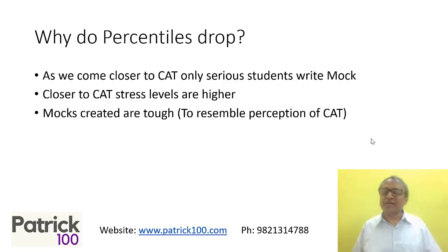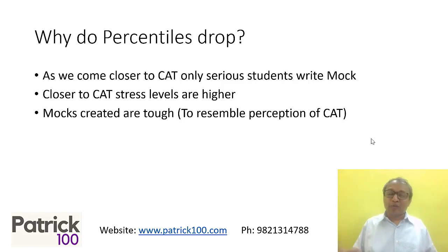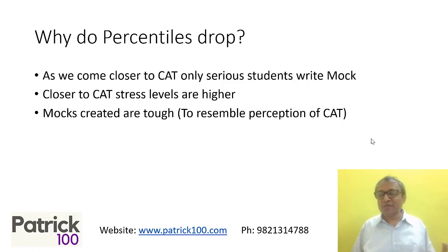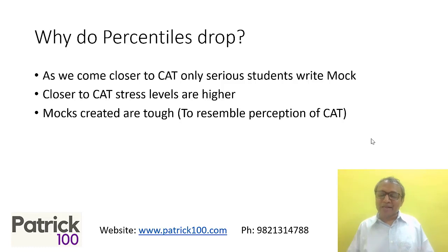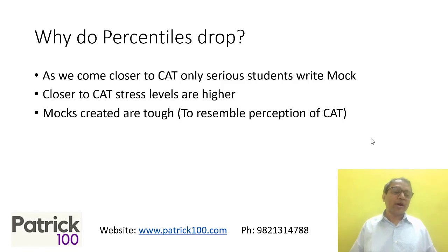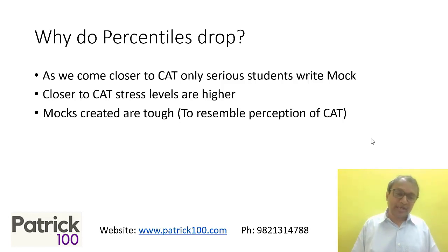That doesn't happen in the actual exam — the exam will always have an easy set. Some have also said their verbal scores are not up to the mark because the papers this year have more direct questions, which is not normally how the exam is. So the best way to know your real performance is to go to last year's CAT papers and solve those. They will give you a better idea. Be open, because the actual CAT can be either easy or tough — you only know once you're in the exam.